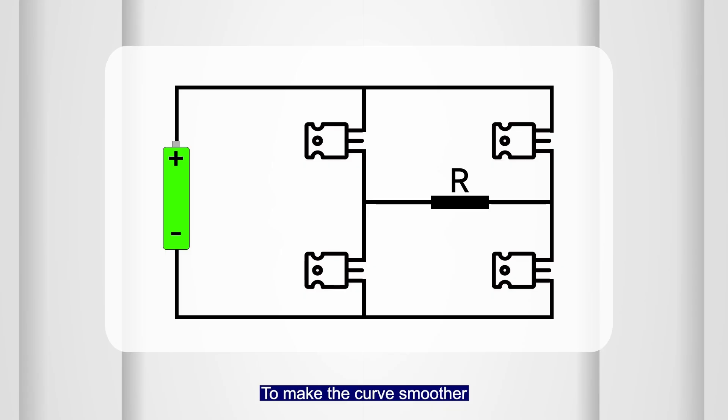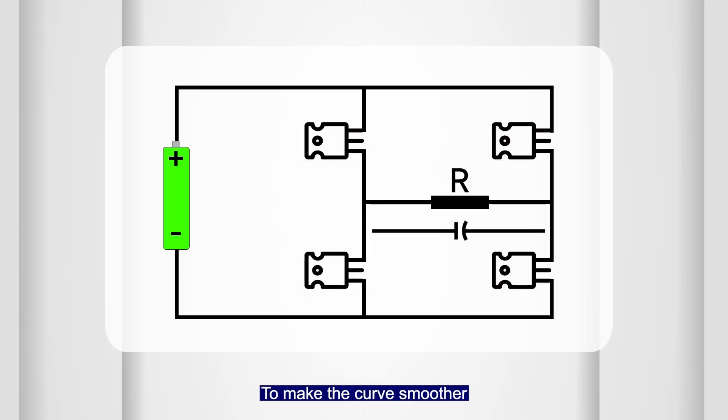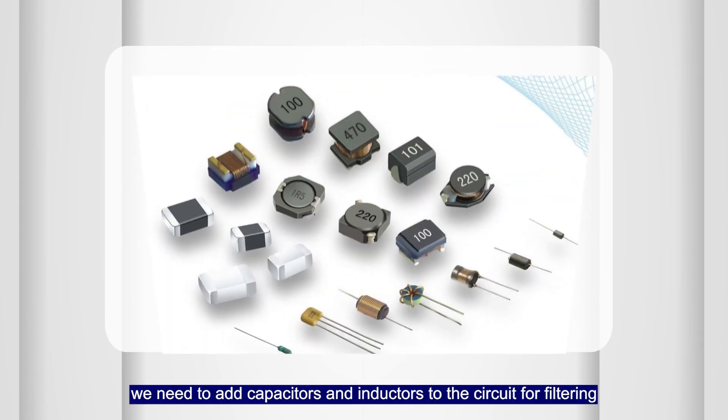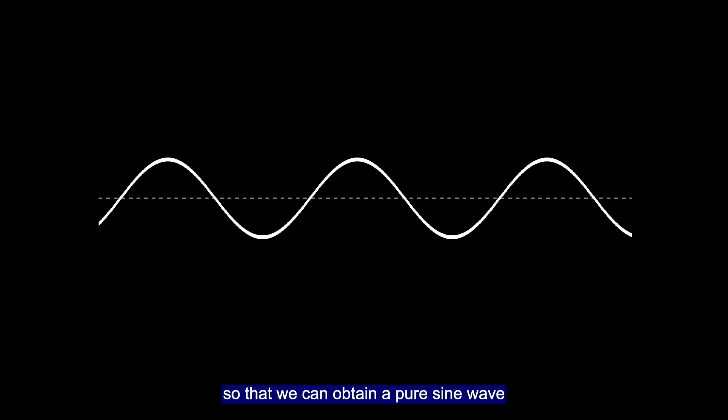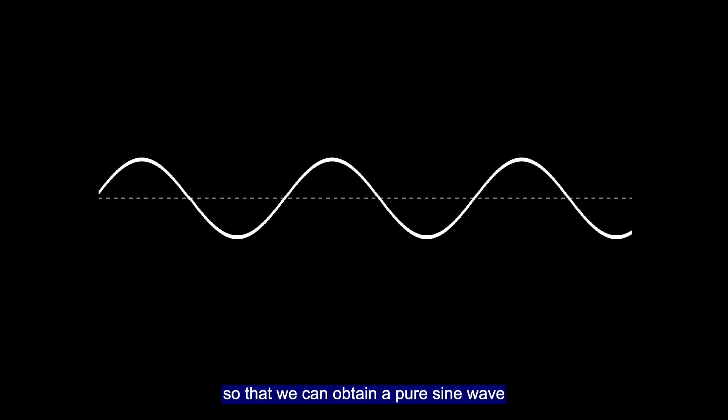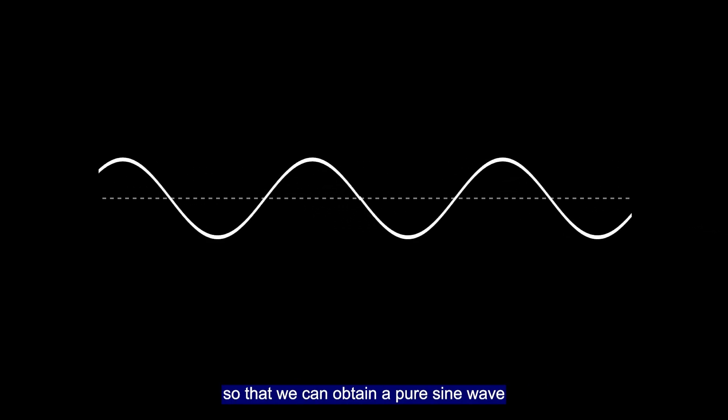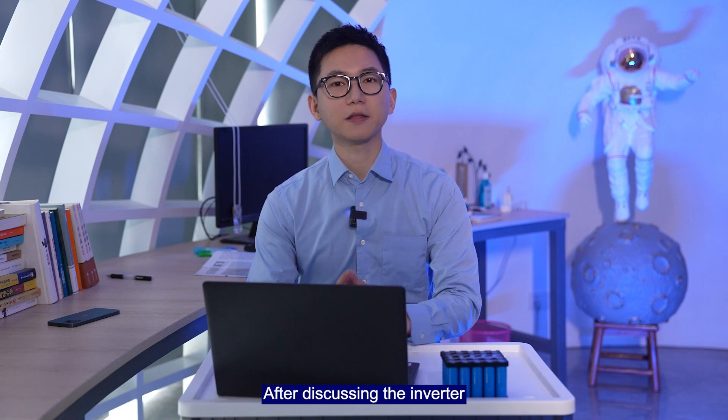To make the curve smoother, we need to add capacitors and inductors to the circuit for filtering, so that we can obtain a pure sine wave output from the inverter.